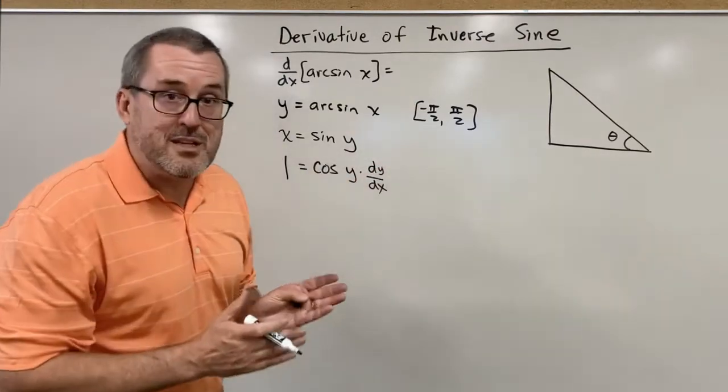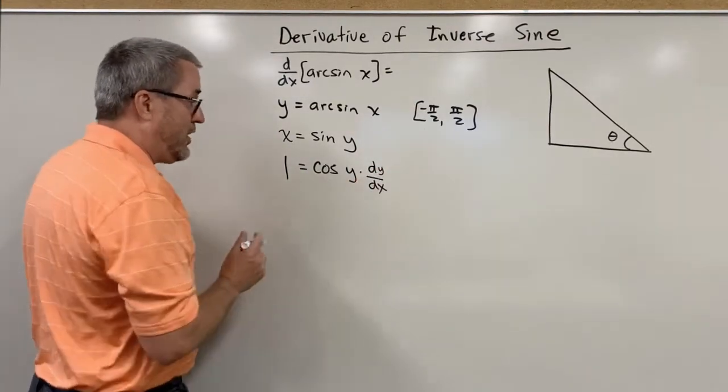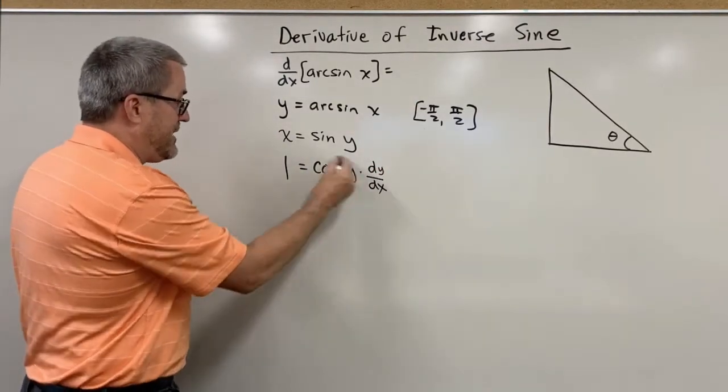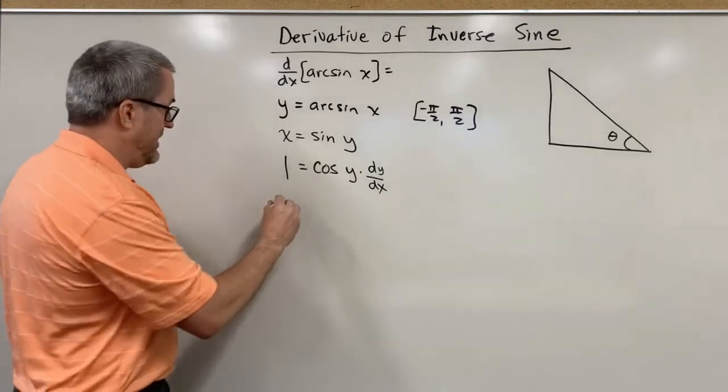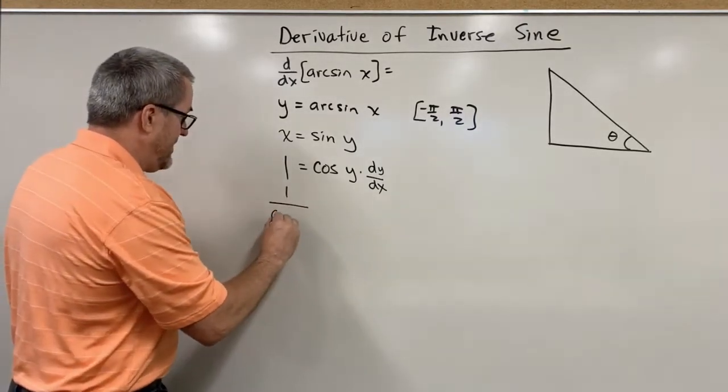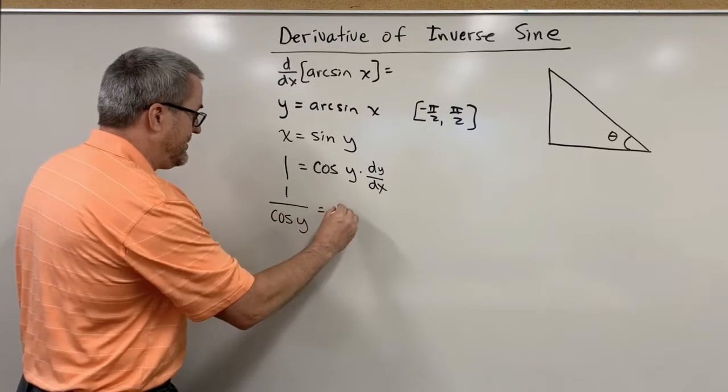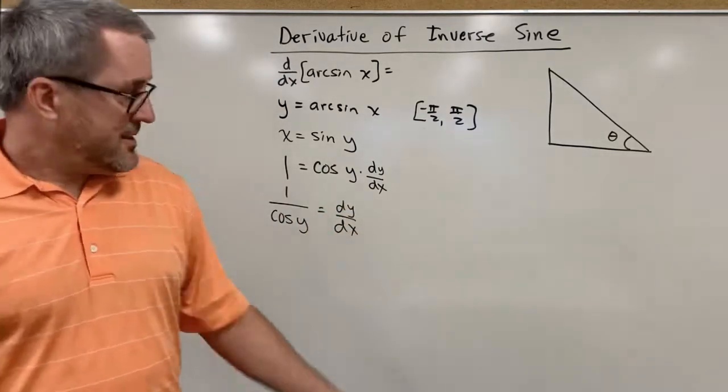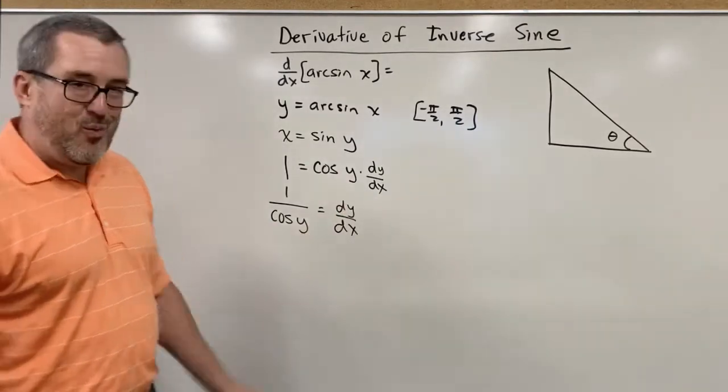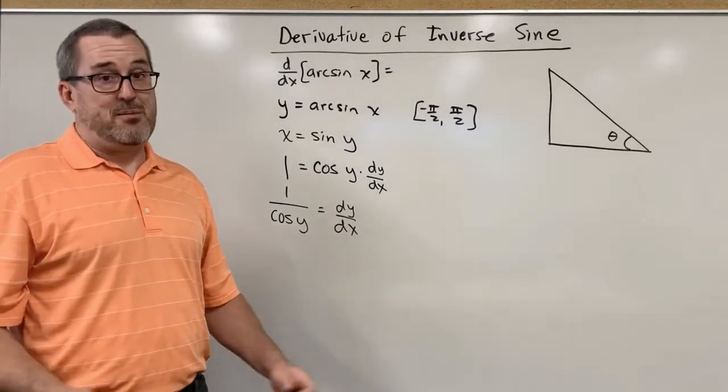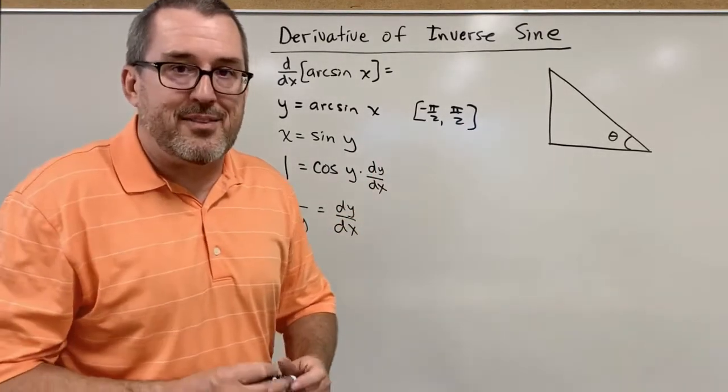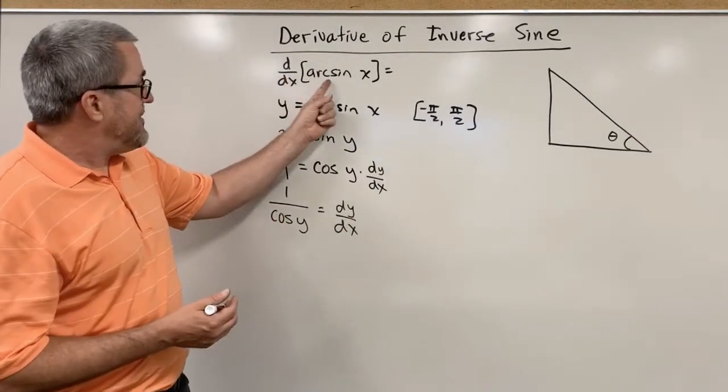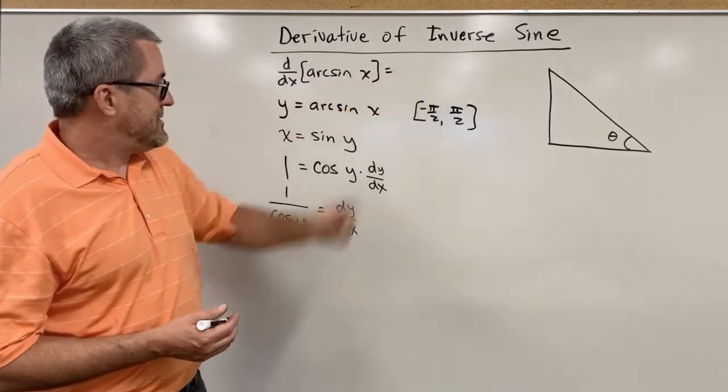Now we want to know what dy dx is, so we will solve for dy dx. Let's divide both sides by cosine of y. So 1 over the cosine of y is equal to dy dx. Now notice our dy dx is in terms of y, and that's kind of problematic. It's fine, but it's problematic in the sense of we would like to have our final answer be in terms of x.